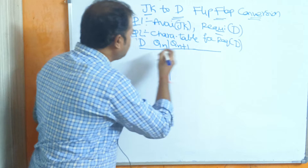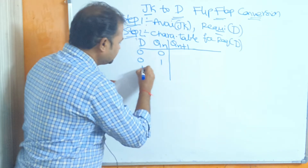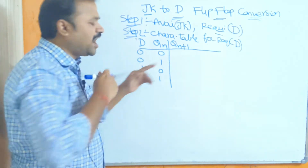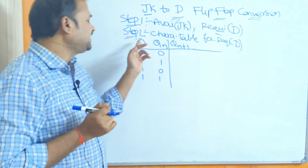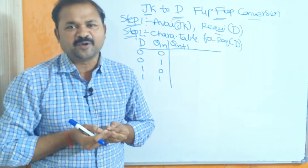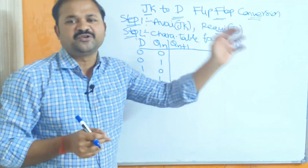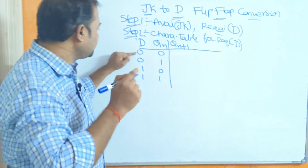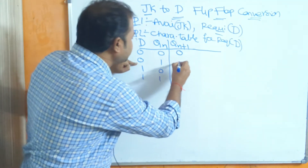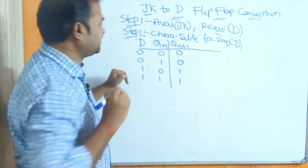We have 2 inputs, so totally we will have 4 combinations. The output is similar to D only, because with the D flip-flop we are storing the data, so the input is produced as the output. The D values for the four combinations are: 0, 0, 1, 1.